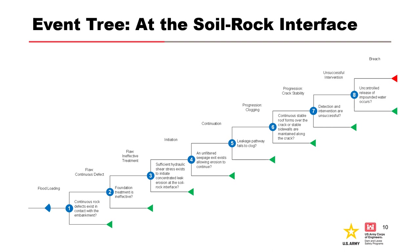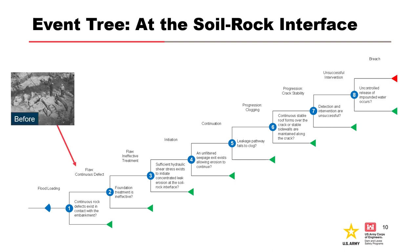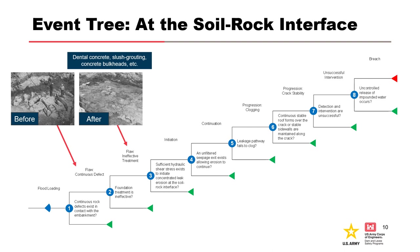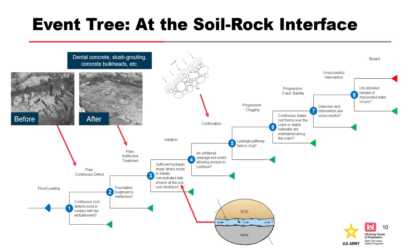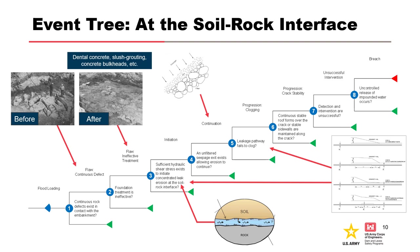In this example, the typical event tree for concentrated leak erosion was adapted to assess the mechanism at the soil-rock interface. Node 1 assesses the likelihood of a continuous open rock defect existing in contact with the embankment. Node 2 was added to assess the effectiveness of any foundation treatment. Given the crack or gap exists, node 3 assesses the likelihood of initiation, node 4 assesses the probability of an unfiltered exit, node 5 assesses the potential for clogging, and node 6 assesses the mechanical condition for progression.